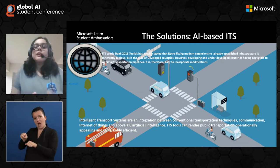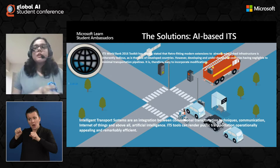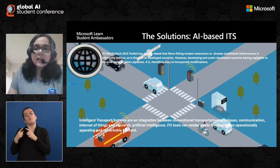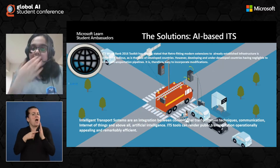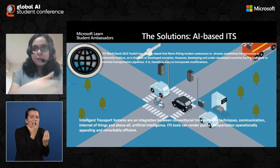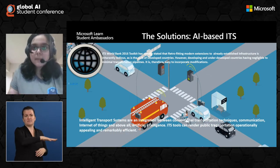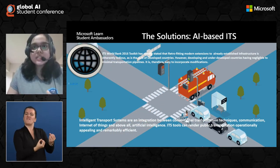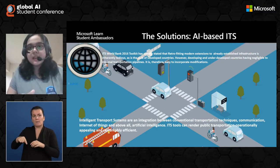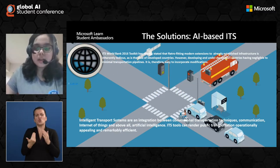It becomes really easy to incorporate modifications and changes in developing and underdeveloped countries. We can think of this using a gardening example: if the field you have is barren, it's easy to plant flowers in it. However, if you already have a well-established garden, it would take a lot of time to tear it down, renovate it, and then plant new flowers. This is what the ITS World Bank 2016 toolkit means.